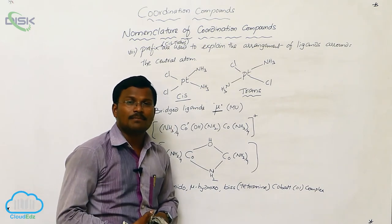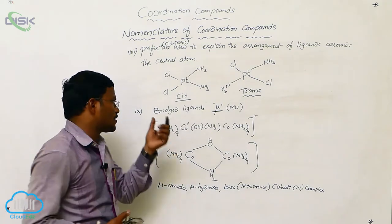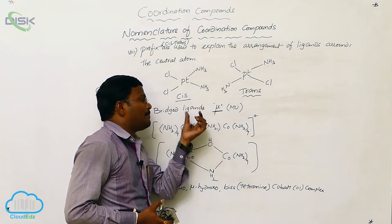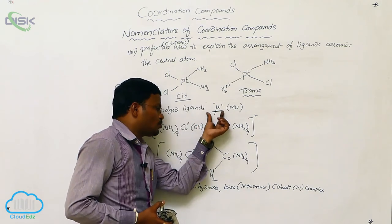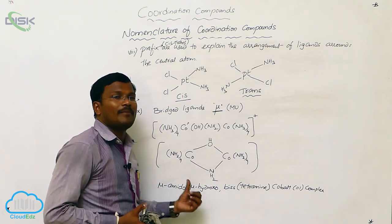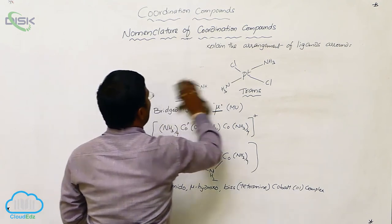So, next, sometimes some ligands are present in between two metals; such ligands are called bridged ligands. So, we have to use the prefix word mu to indicate bridged ligands in the nomenclature. So, this is about nomenclature of coordination compounds.